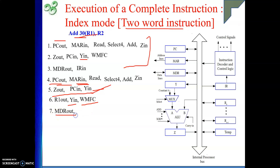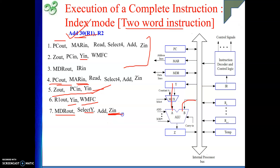After WMFC, MDR out — that brings the value 30 — and then select Y, since R1 was placed in the Y register. Then add, Z in. This addition result is your effective address — the addition of the address field (30) and the index register content (R1).